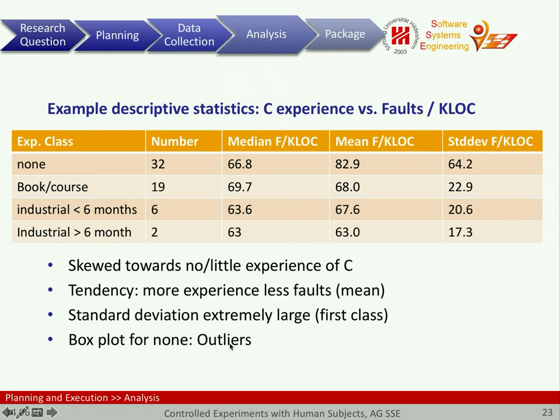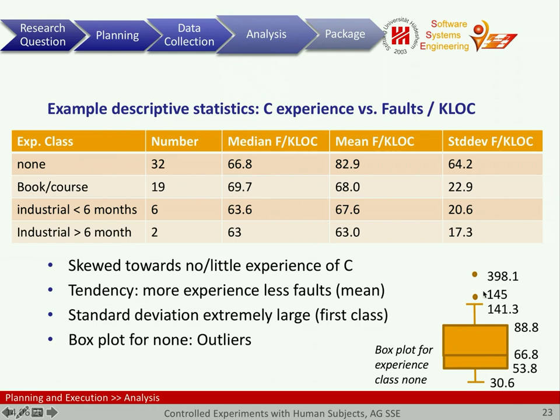We now do a box plot to identify if there are some outliers, and that's what we get. The average is 66.8, and we have this interval. Then we have 145, which is pretty much on the high side. And then 398.1, which is really extremely high — more than five times the median value. So this is probably a very good candidate to remove as an outlier.